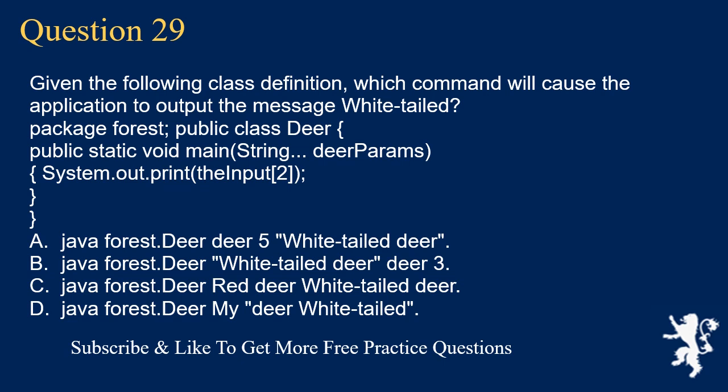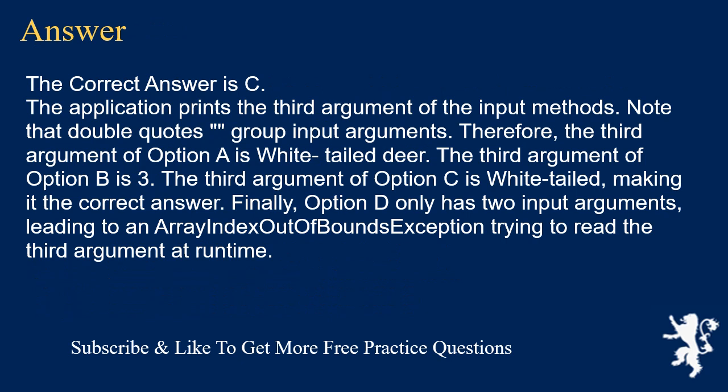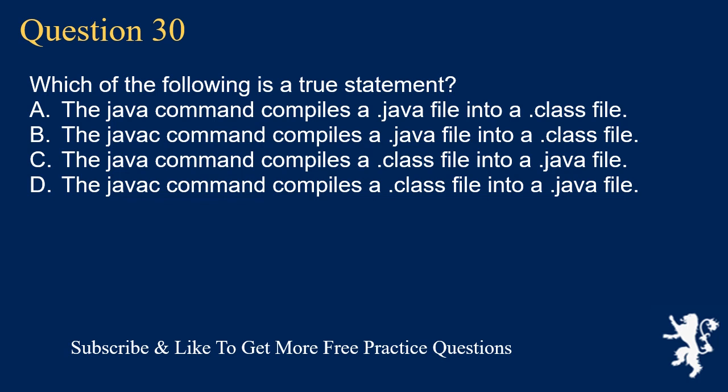Question 29: Given the following class definition, which command will cause the application to output the message 'white-tailed'? The application prints the third argument of the input. Note that double quotes group input arguments. The third argument of option A is 'white-tailed dear', the third argument of option B is '3', the third argument of option C is 'white-tailed', making it the correct answer. Option D only has two input arguments, leading to an array index out-of-bounds exception at runtime. The correct answer is C.